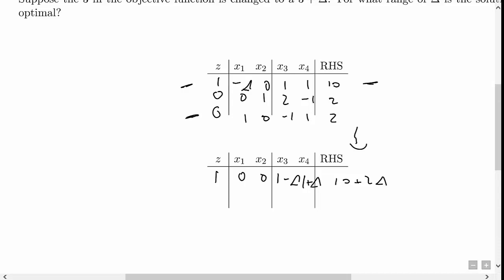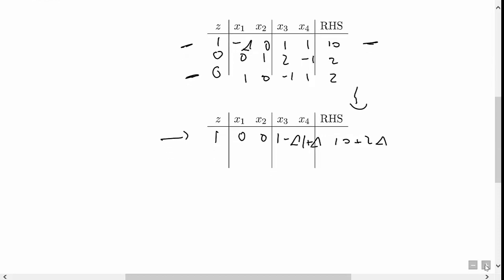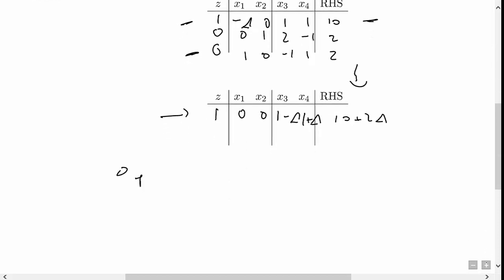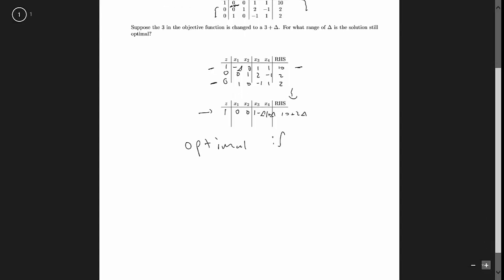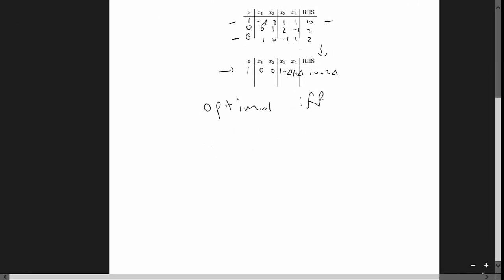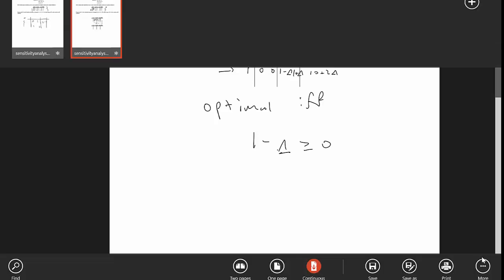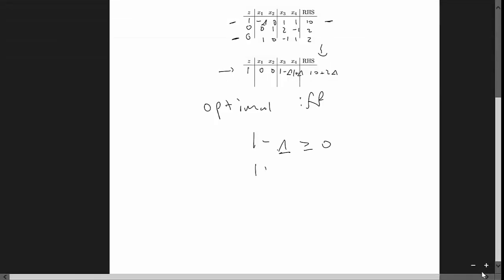So the only question here for the optimality test is whether all of these entries are greater than or equal to 0. We are optimal if and only if 1 minus delta is greater than or equal to 0, and 1 plus delta is greater than or equal to 0. So this means that delta needs to be in the range negative 1 to 1.